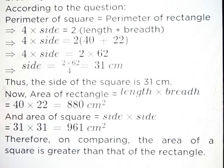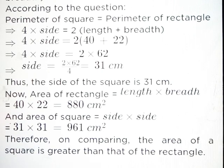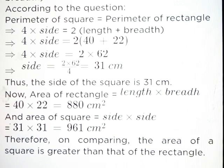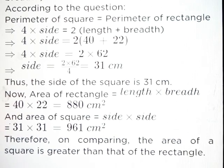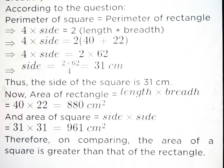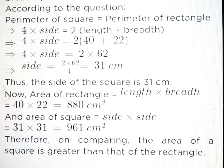Now, area of rectangle is equal to length into breadth: 40 into 22 is equal to 880 centimeter square. And area of square is equal to side into side: 31 into 31, that is equal to 961 centimeter square. Therefore, on comparing, the area of a square is greater than that of the rectangle.